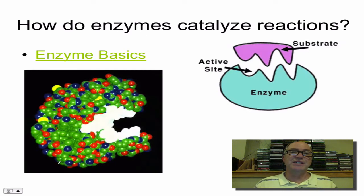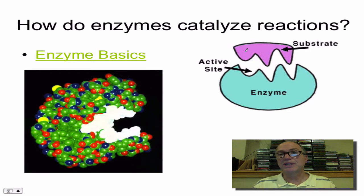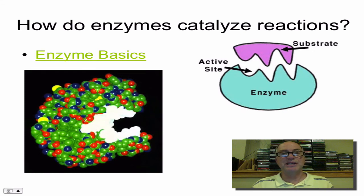Let's take a look at how enzymes catalyze reactions. The enzyme can be shown schematically in a model. An enzyme is made of protein and usually has a groove or cleft in it — they call this part of the enzyme the active site. The substrate, or the molecule that will be changed, will fit just like a lock and key into the active site of the enzyme. This model shows in more detail what the atoms might look like in all the amino acids that make up the protein of the enzyme, and you can still make out this groove or active site.